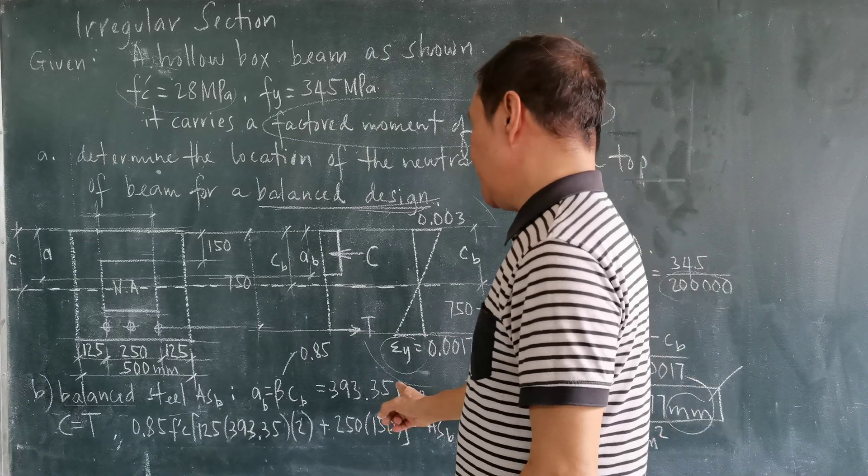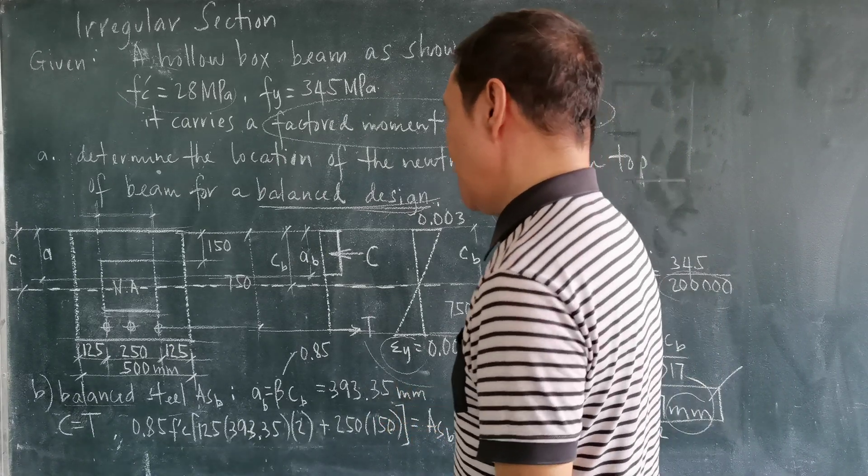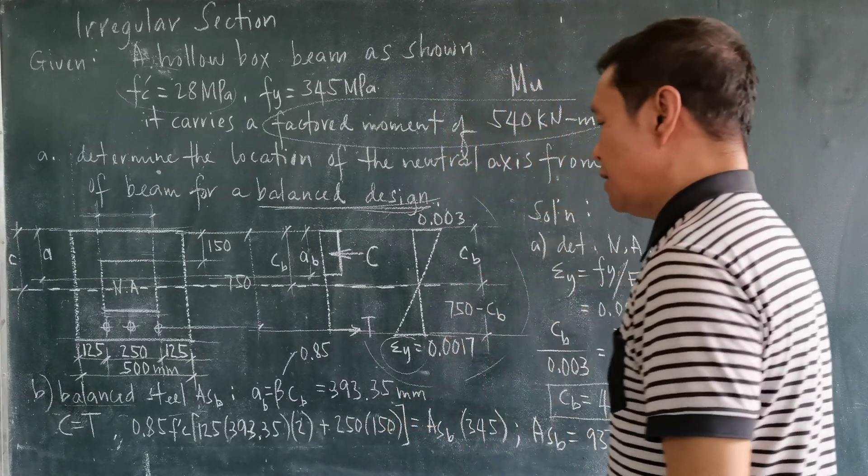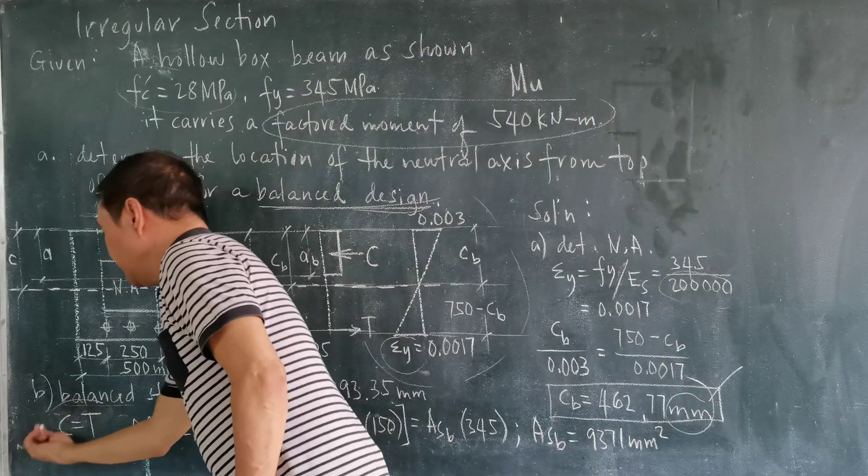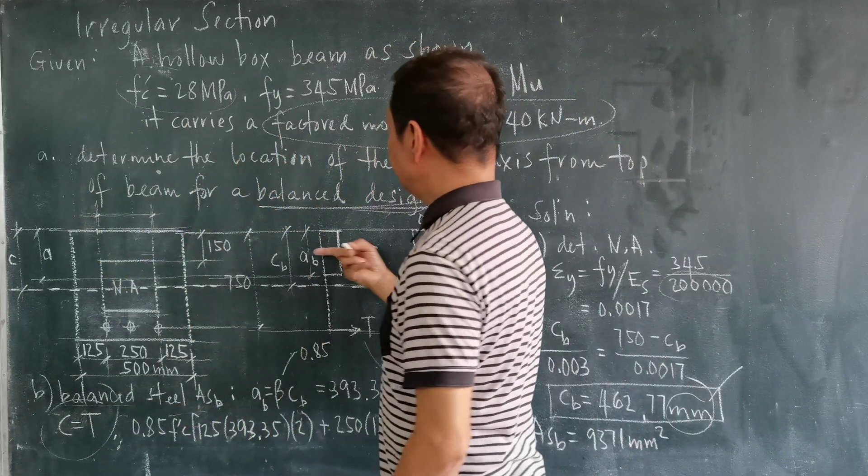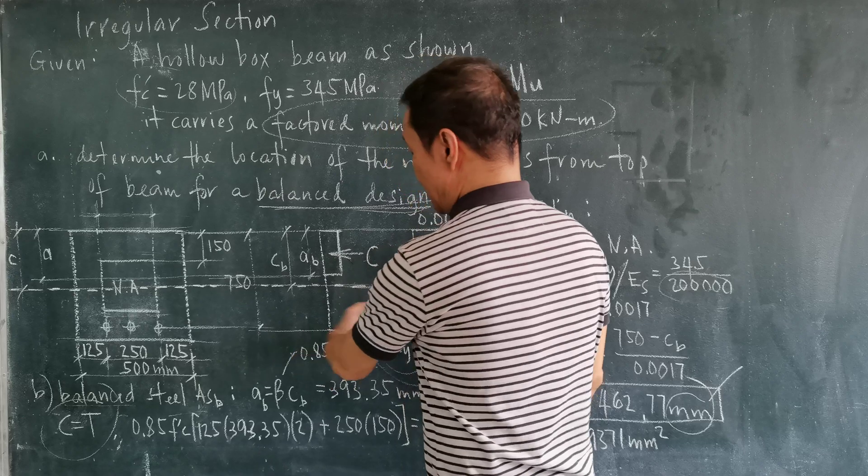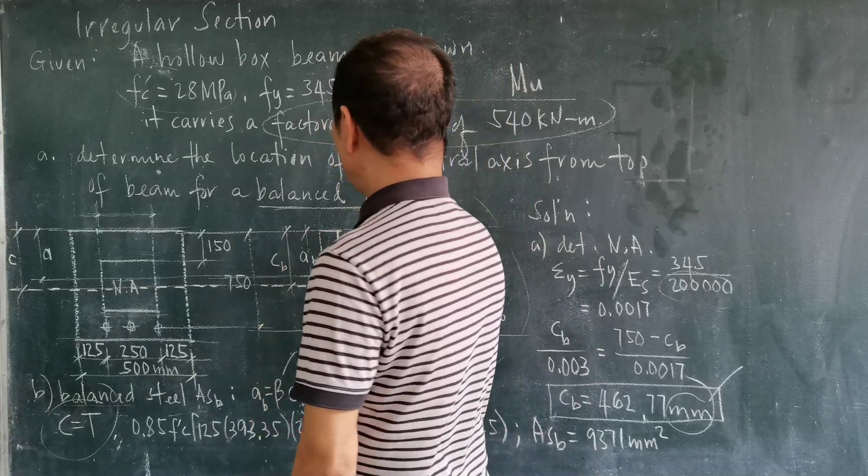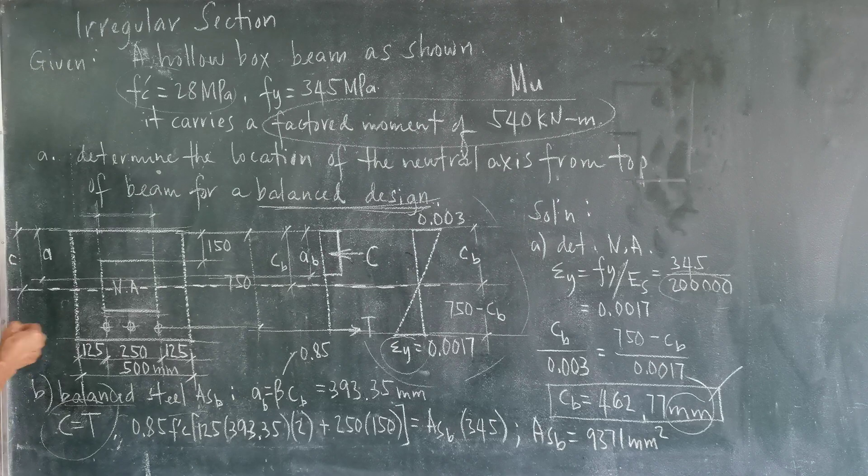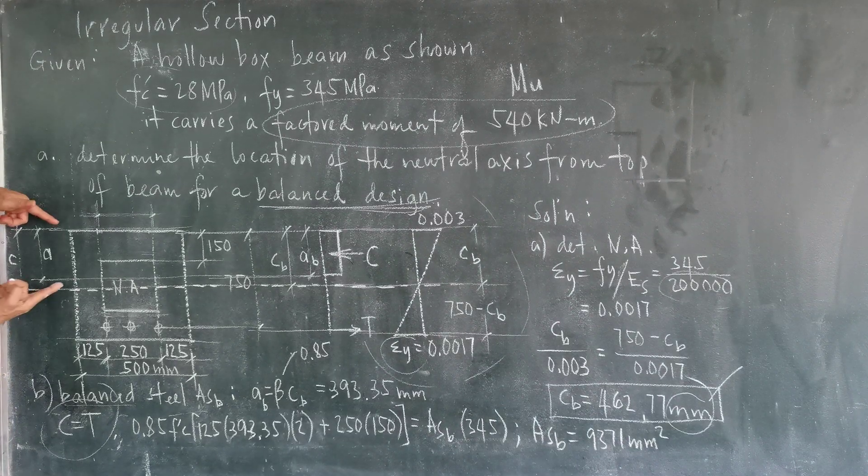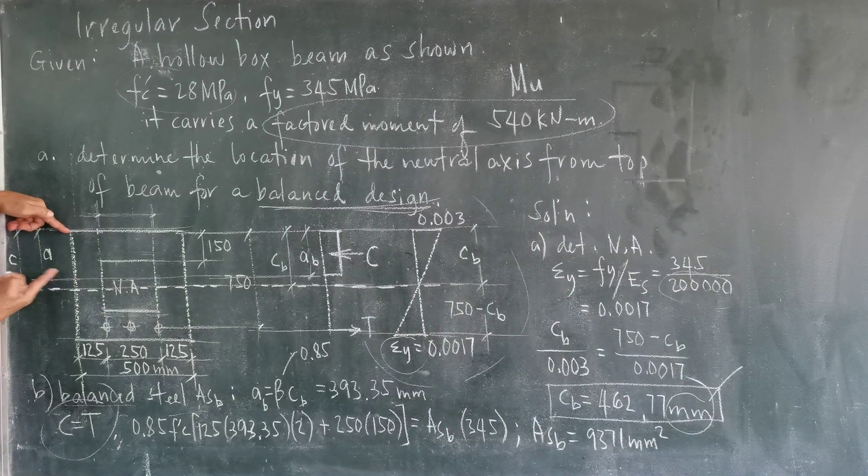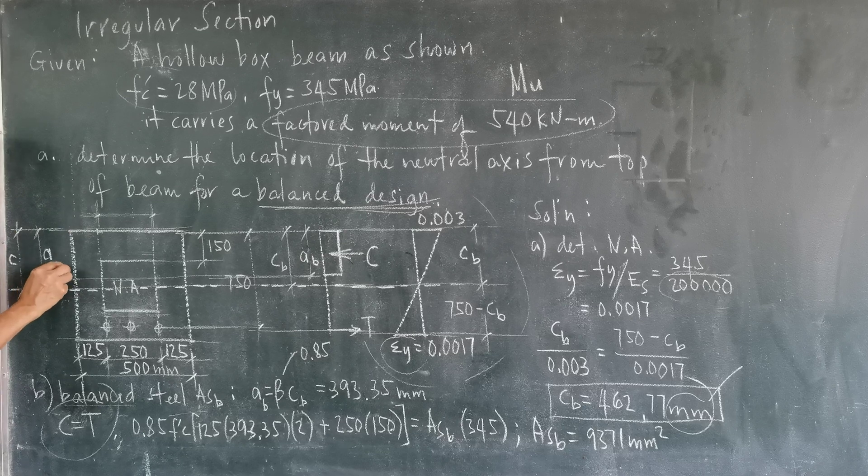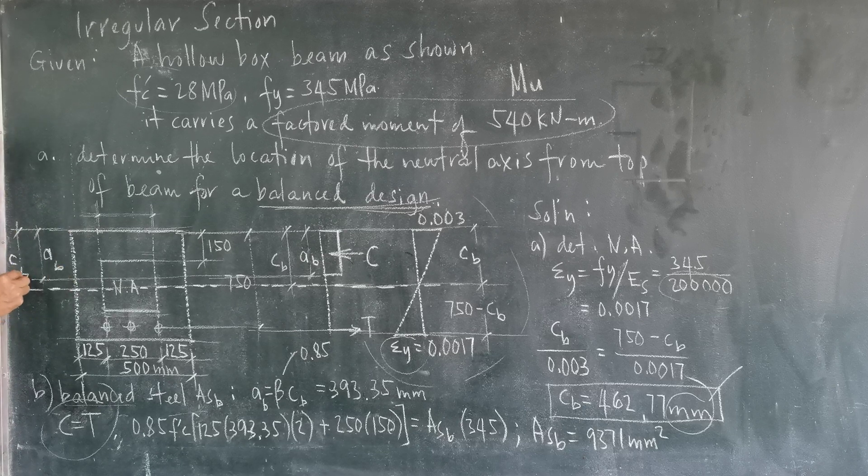So knowing this, A sub B, we can now make use of the equation of compressive force equals the tensile force. But the compressive force is acting on this irregular area. This is our C and this is our A, smaller than C.